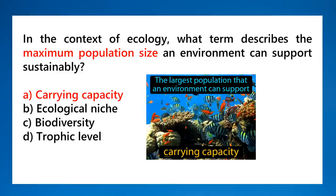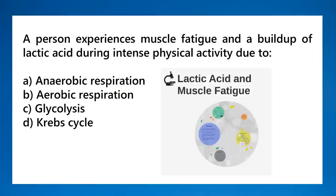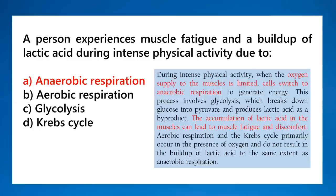A person experiences muscle fatigue and a buildup of lactic acid during intense physical activity because of anaerobic respiration — no oxygen is involved. During intense activity when oxygen supply to the muscle is limited, cells switch to anaerobic respiration. This involves glycolysis, which breaks down glucose into pyruvate and produces lactic acid as a byproduct. Lactic acid accumulation leads to muscle fatigue. Aerobic respiration, by contrast, involves the Krebs cycle and oxygen and does not result in lactic acid buildup.